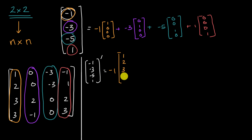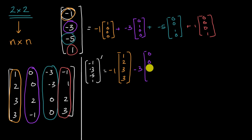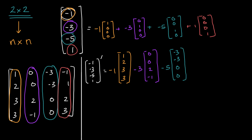So this is going to be negative one times (1, 2, 3, 3), minus three times (0, 0, 2, -1), minus five times (-3, -3, 0, 0), plus one times (-1, 1, 2, 3). It definitely gets a little bit more work involved the more dimensions we have, but the approach is exactly the same.